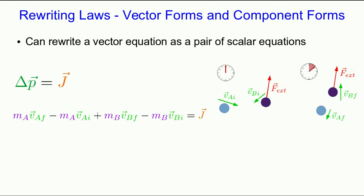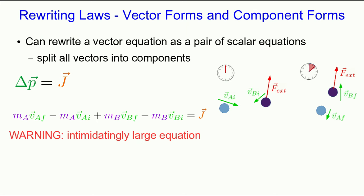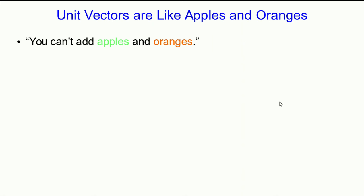And we can rewrite it this way, where I've just expanded out all those delta p's. And now we're going to split all of those vectors into components, except I will warn you before I do so that this results in an intimidatingly large equation. The whole point here is that we do not want to deal with an equation that looks like this. It's extremely cumbersome. So what do we do?